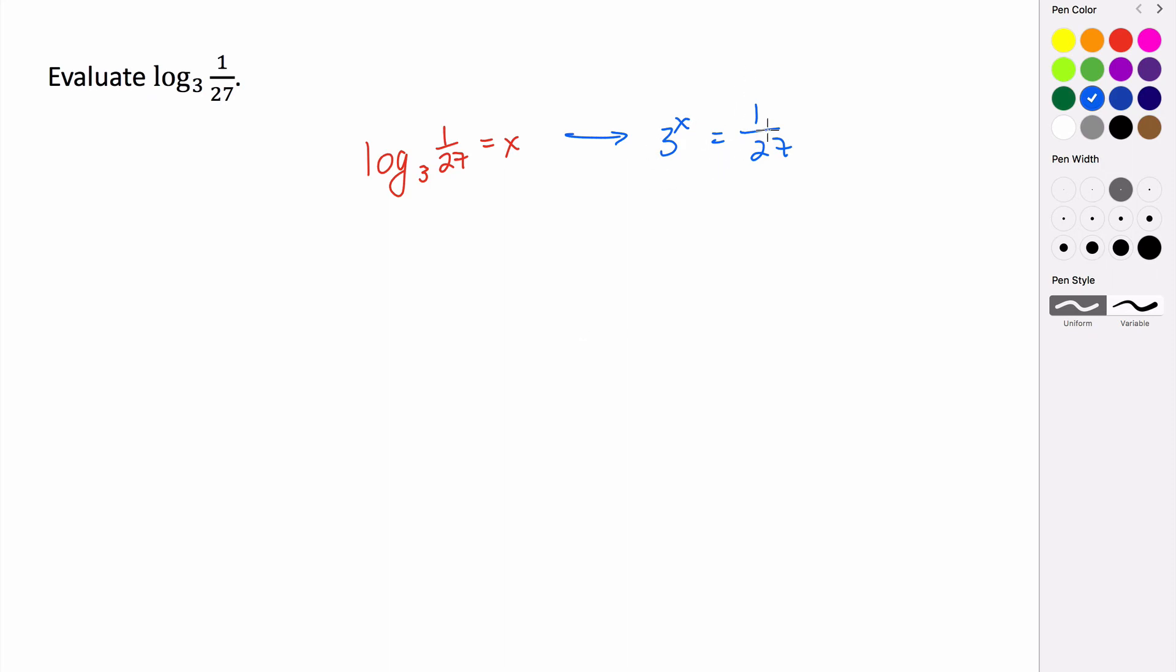Now we want to express both of these as a power with the same base. So if we look at 1 over 27, if we use our properties of exponents, we know that 1 over 27 is the reciprocal of 27.